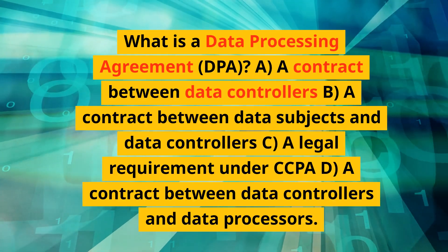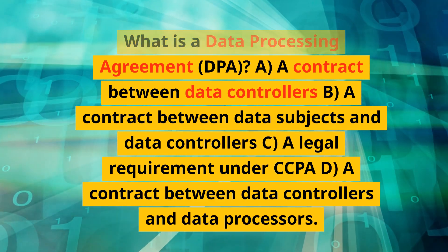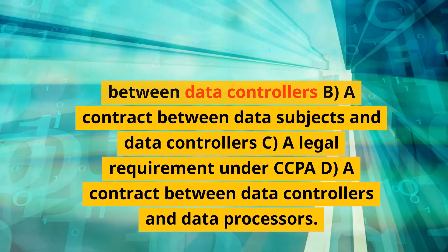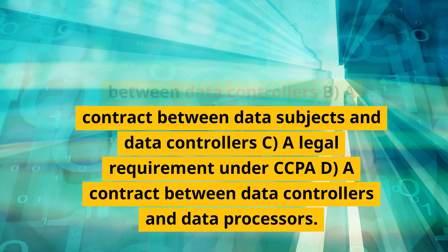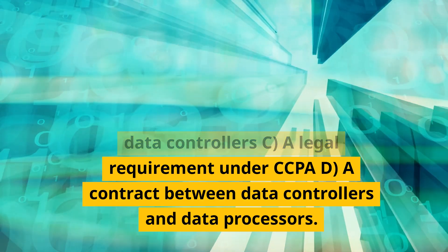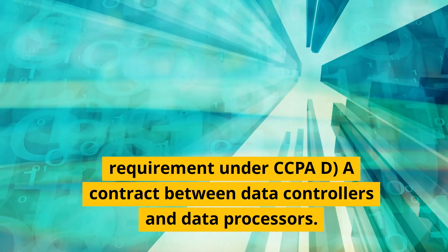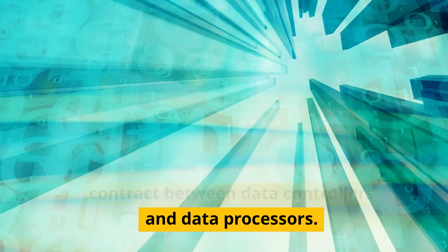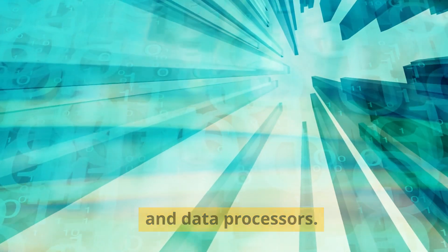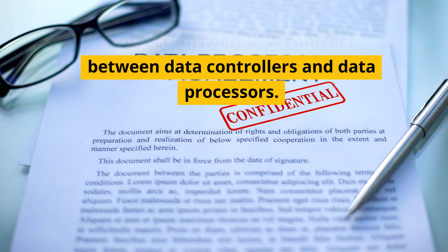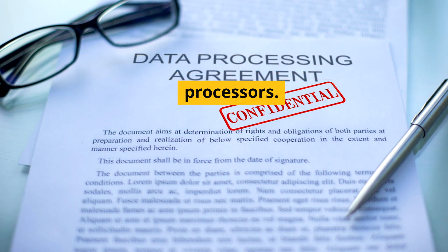What is a Data Processing Agreement (DPA)? A. A contract between data controllers. B. A contract between data subjects and data controllers. C. A legal requirement under CCPA. D. A contract between data controllers and data processors. Correct answer: D. A contract between data controllers and data processors.